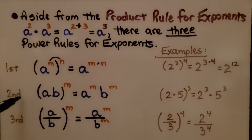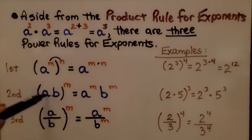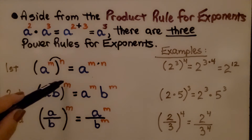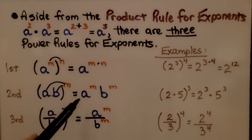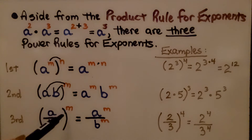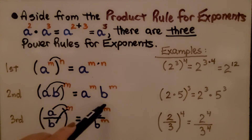The second power rule says if we have ab inside the parentheses and it's raised to the m power, this m exponent affects everything inside the parentheses, so we have a to the m times b to the m. The third power rule says that m affects the a numerator and the b denominator, so it's equal to a raised to the m over b raised to the m.